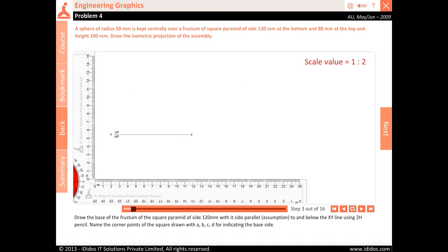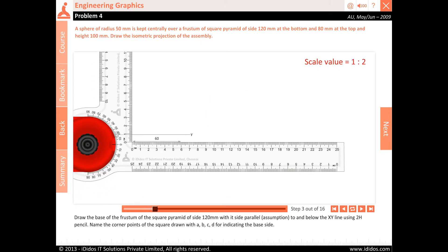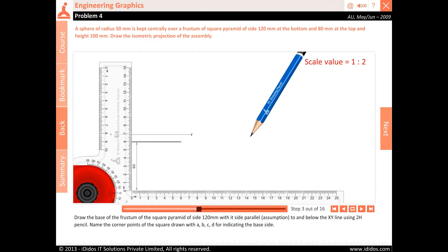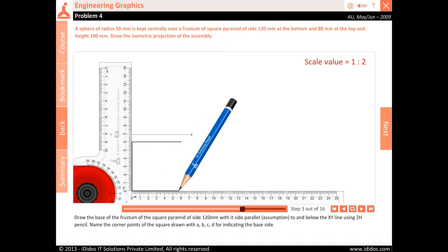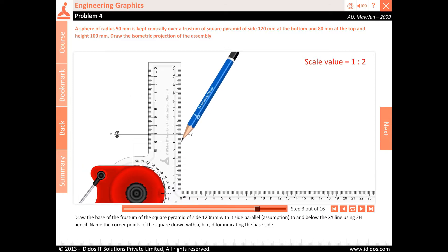Draw the base of the frustum of the square pyramid of side 120 millimeters with its side parallel to and below the XY line using 2H pencil. Name the corner points of the square drawn with A, B, C, D for indicating the base side.